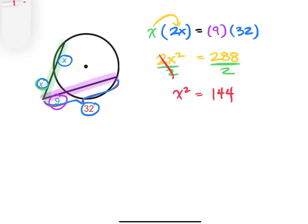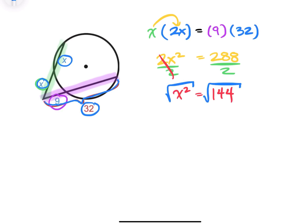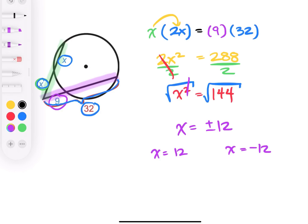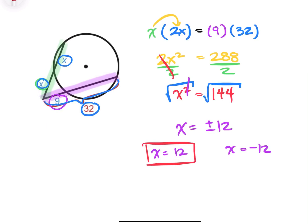To get x, we take the square root of both sides. The square and square root cancel, leaving x equals plus or minus 12. A positive 12 times positive 12 is 144, and negative 12 times negative 12 is also 144. However, we can't have a negative length, so the answer is positive 12. That's the two secant segment theorem — I hope this helped. Leave a comment if you have questions, and don't forget to like and subscribe.